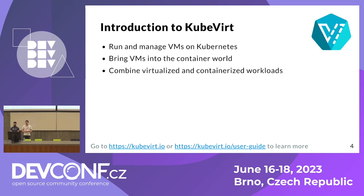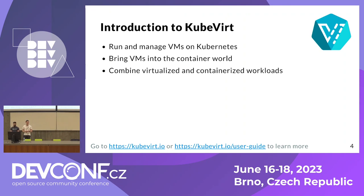You can also combine your virtualized and your containerized workloads. For example, let's say you have a virtualized application and you wanted to build a new microservice on top of that. Then you can run your virtualized application in your cluster and build your new application in a container, and they both can work together using the same network. To do all of this, KubeVirt extends Kubernetes with certain virtual machine-related custom resource definitions, and therefore allows you to use the Kubernetes API to manage virtual machines.